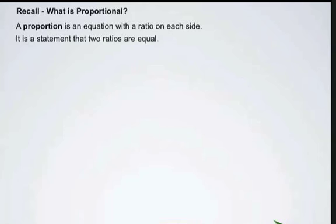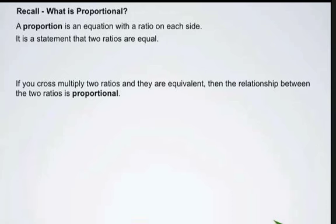Now, we're going to take a look at proportions. A proportion is an equation with a ratio on either side of the equal sign. It's a statement that forces 2 ratios to be equal. If you cross-multiply 2 ratios and they are equivalent, then the relationship between the two ratios is proportional.